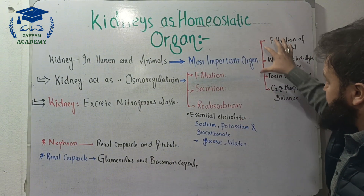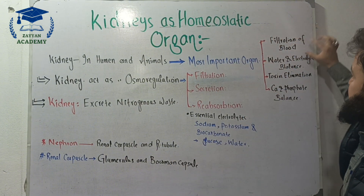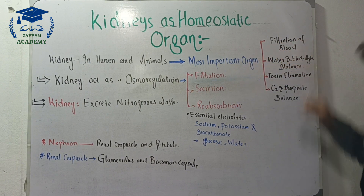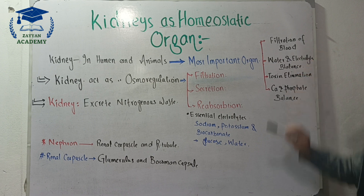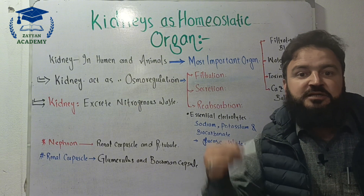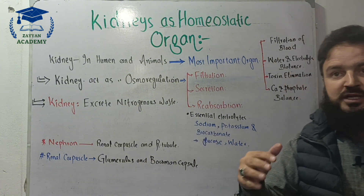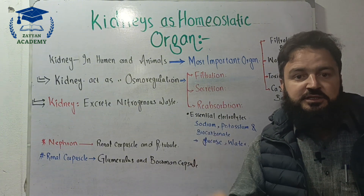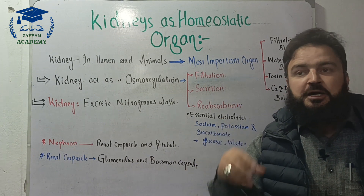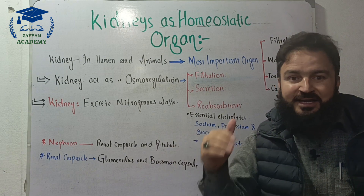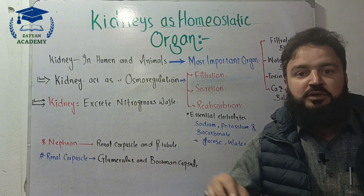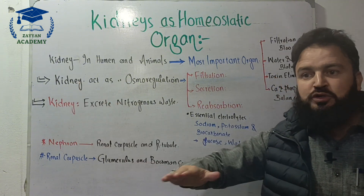The first function we discuss is filtration of blood. Filtration of blood is the most important kidney function. Filtration of blood means the blood is kept safe and clean. The kidney also regulates how many electrolytes and compounds are present, increasing or decreasing them as needed, and excretes waste through urine.